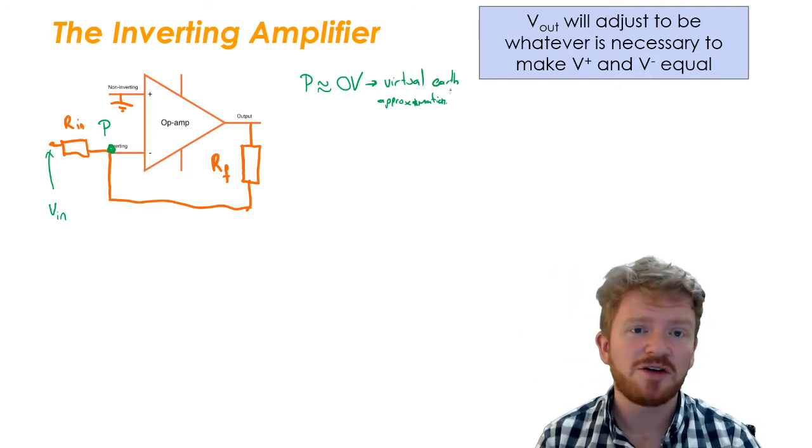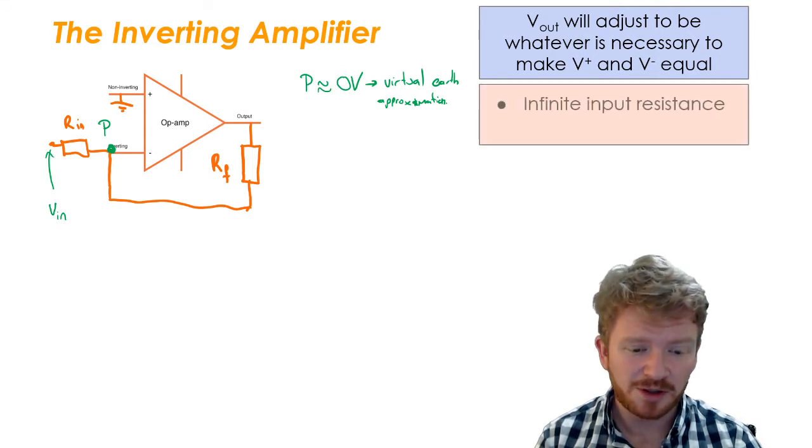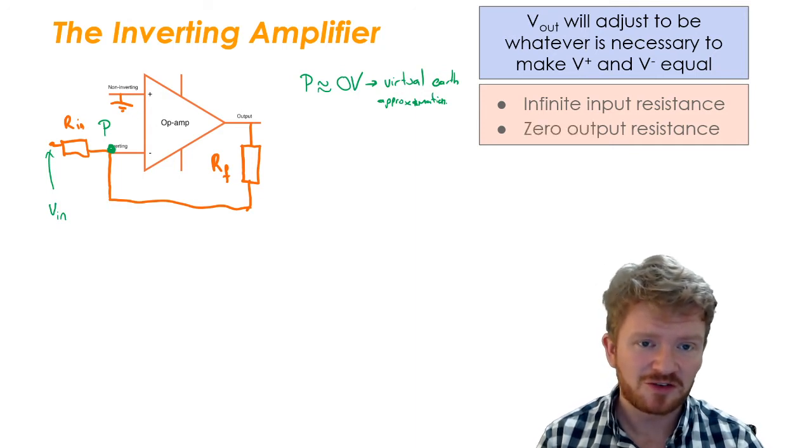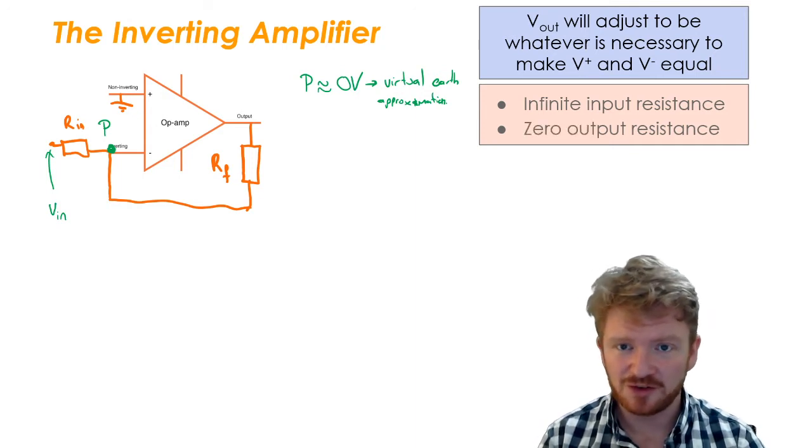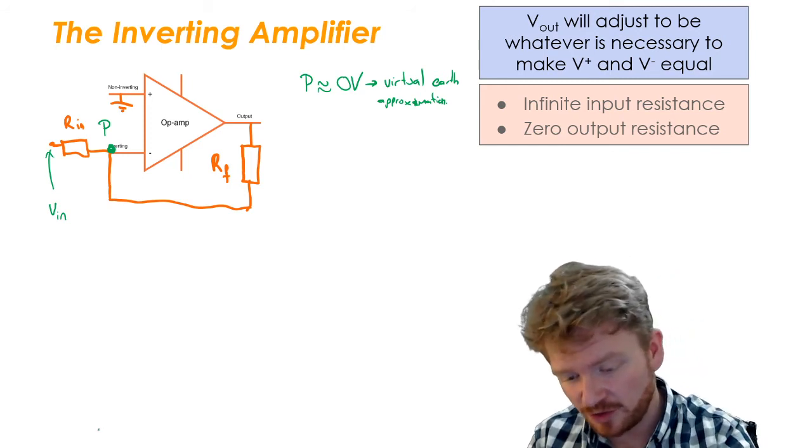Now there are two other features of an ideal op-amp that I'm going to look at before we go further. So what we need to remember is that an ideal op-amp has an infinite input resistance and zero output resistance. So with all these facts in mind, we can start to look at what's going on.